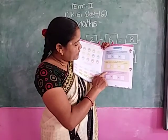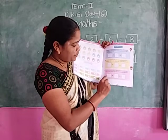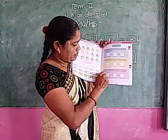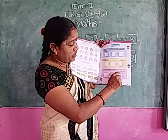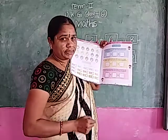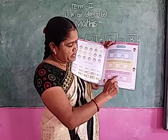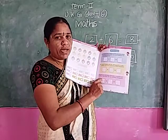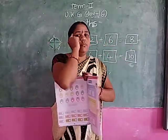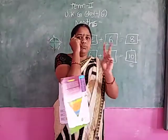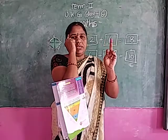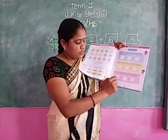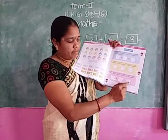2 fish are swimming in the water. Write down 2. 5 more fish join them. How many fish are swimming altogether? 2 plus 5. Which is the greater number? 5. Keep 5 in your mind. Open 2 fingers. After 5: 6, 7. What is the answer? 2 plus 5 equals 7.